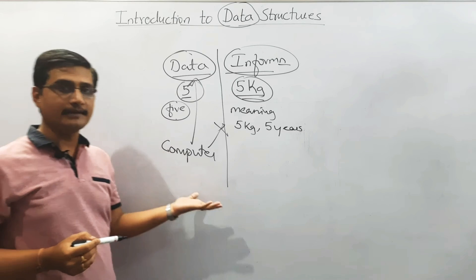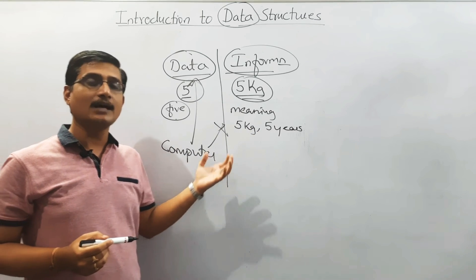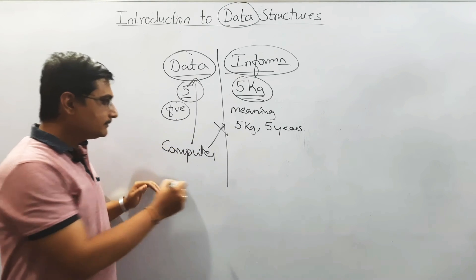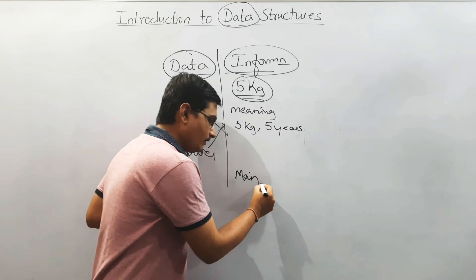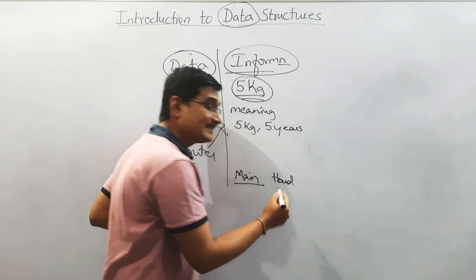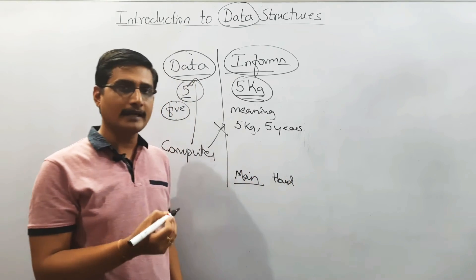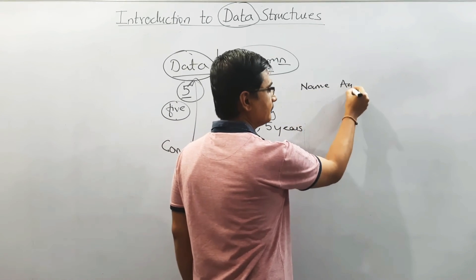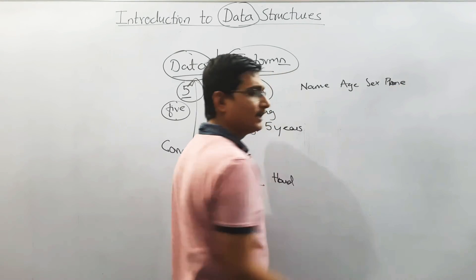Once we know what is data and what is information, how that data is organized and structured on the computer matters a lot. If data is in main memory, the way of representing it will be different. If it is on the hard disk — that is secondary memory — then the organization of that data will be different. Let us consider we are going to collect student information: name, age, sex, and phone number of a student.